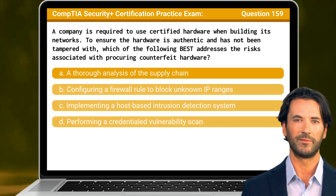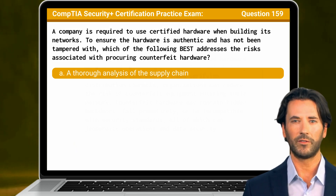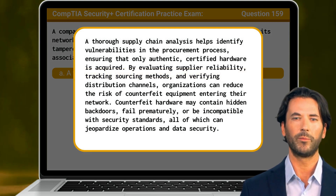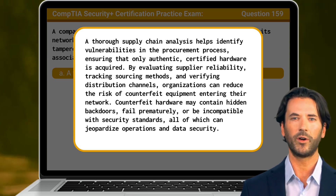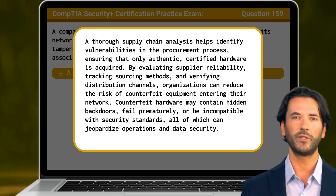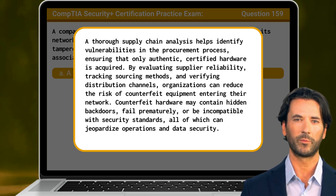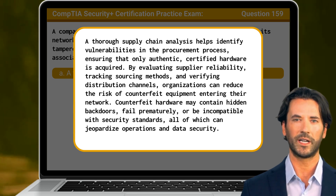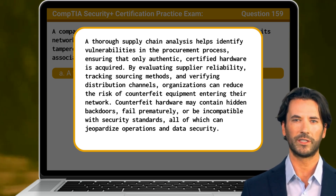The answer is A. A thorough analysis of the supply chain. A thorough supply chain analysis helps identify vulnerabilities in the procurement process, ensuring that only authentic, certified hardware is acquired. By evaluating supplier reliability, tracking sourcing methods, and verifying distribution channels, organizations can reduce the risk of counterfeit equipment entering their network. Counterfeit hardware may contain hidden back doors, fail prematurely, or be incompatible with security standards, all of which can jeopardize operations and data security.